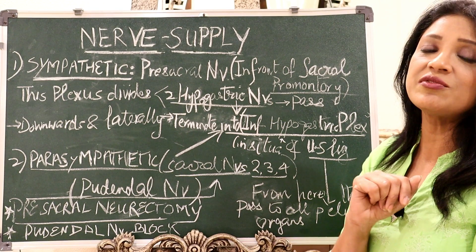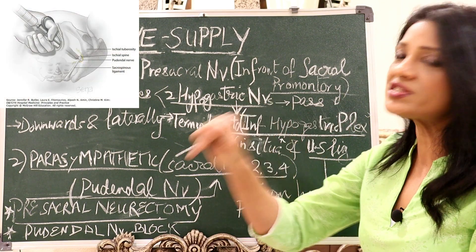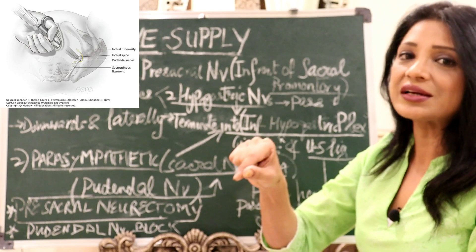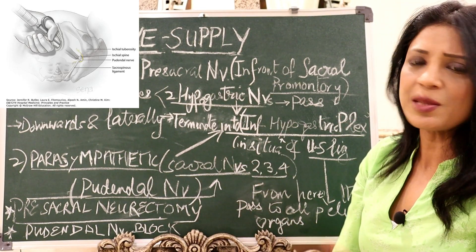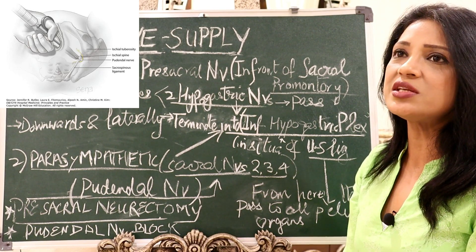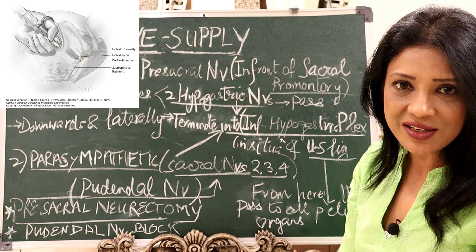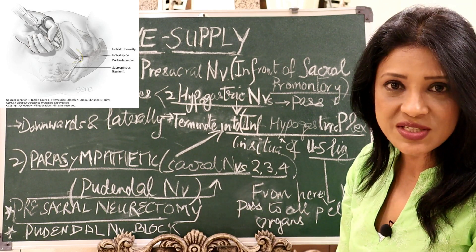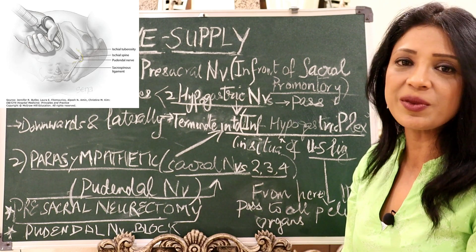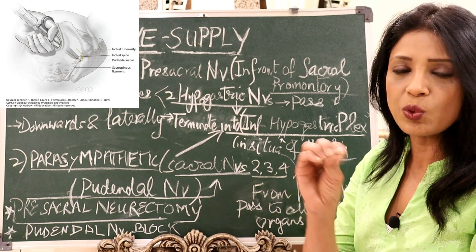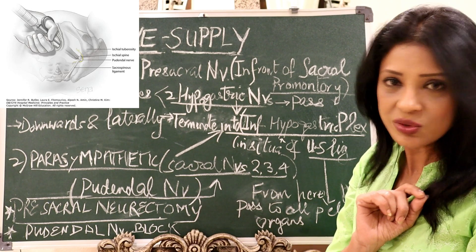For forceps or ventouse deliveries, the pudendal nerve can be blocked near the ischial spine. However, this is not very commonly practiced now. Previously, high and mid-cavity forceps were used, requiring pudendal block, but these are now banned. Currently only outlet forceps are used, and local anesthesia for episiotomy is sufficient — there is no need to block the pudendal nerve.